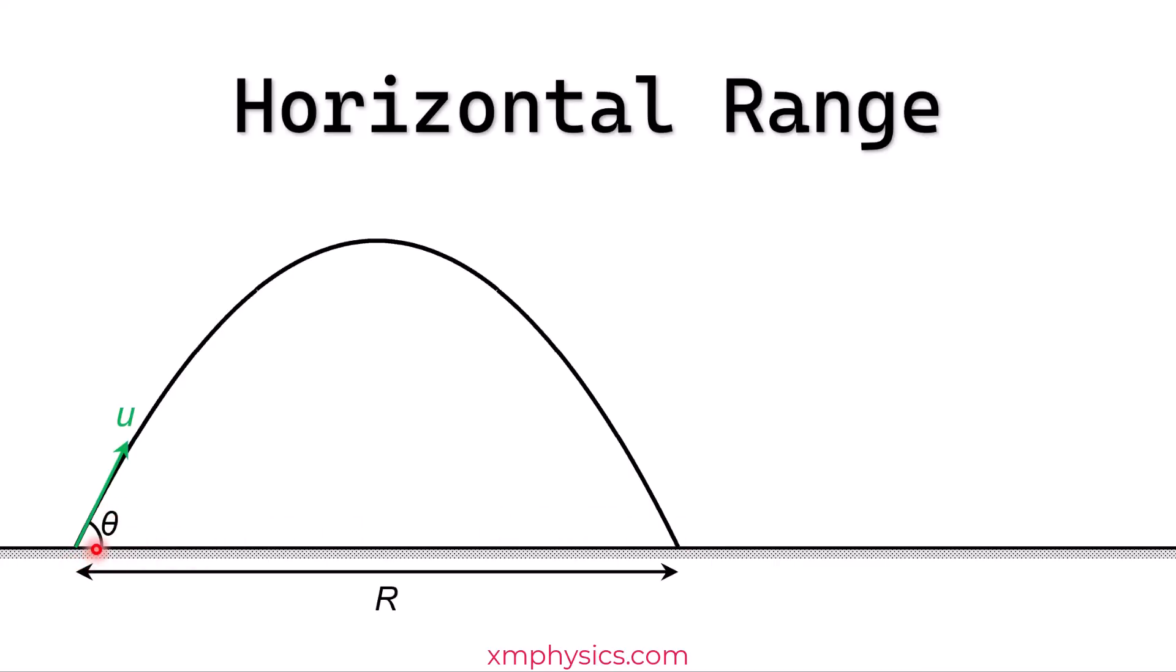So in my previous video, I've already explained how to calculate the horizontal range. The first step is to resolve the initial velocity into its horizontal and vertical components. And then by considering the vertical motion, we can calculate the time of flight, meaning how long the projectile stays in the air before it lands. And then by considering the horizontal motion, we can obtain the horizontal range. So this is the starting point for this video.